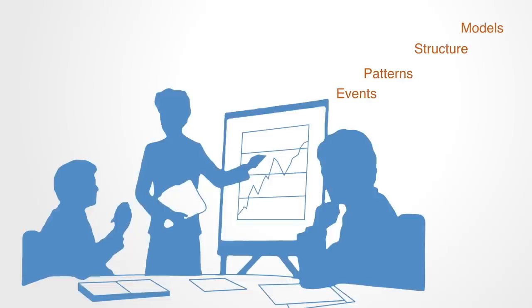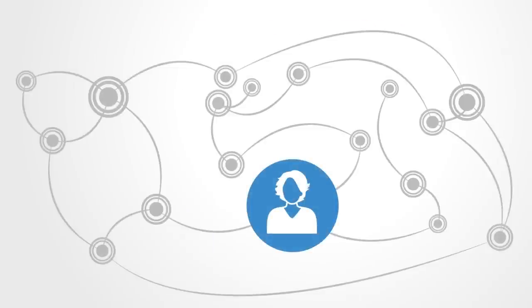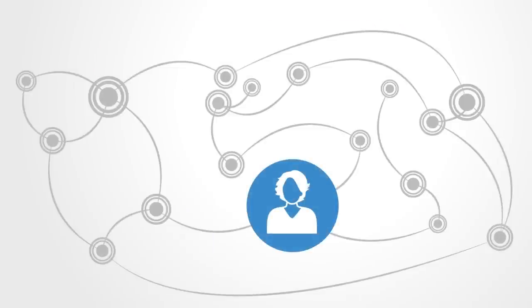The iceberg model argues that events and patterns, which are observable, are caused by systemic structures and mental models, which are often hidden. A fundamental systems thinking concept is that different people in the same structure will produce similar results. That is to say, structure causes 80 to 90% of all issues, not so much the people.